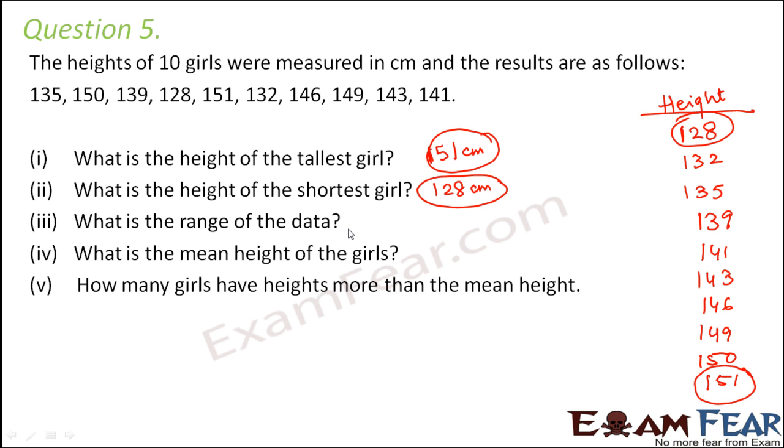What is the range of the data? So range is equal to tallest minus shortest, that is 151 minus 128, which is equal to 23. So 23 centimeters is the range. What is the mean height of girls? How do you calculate mean height? So mean height is going to be the sum of the heights.